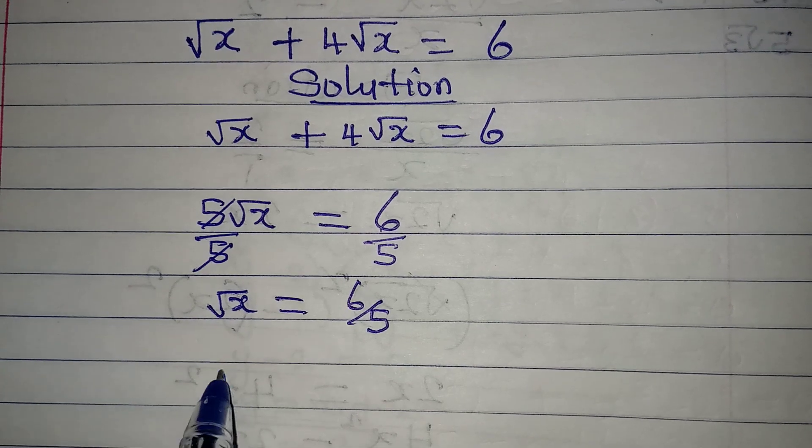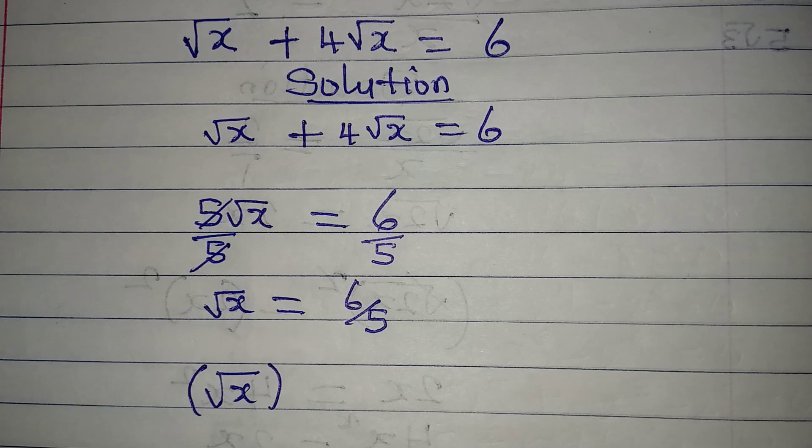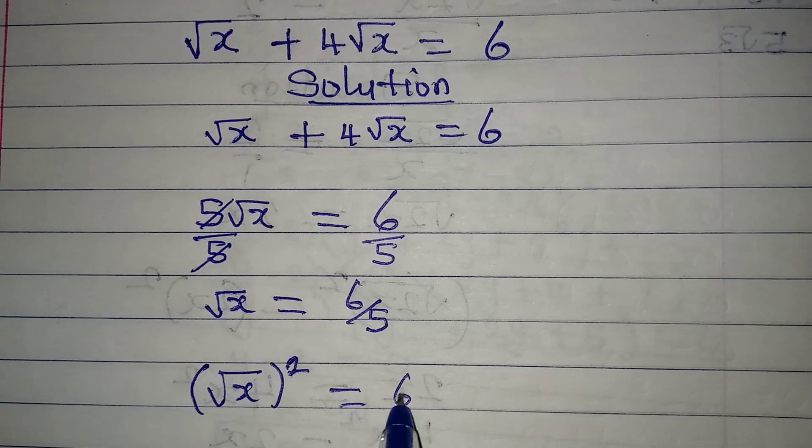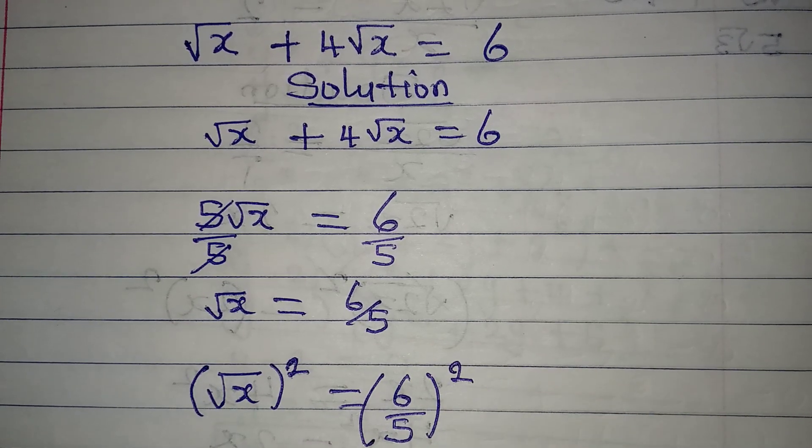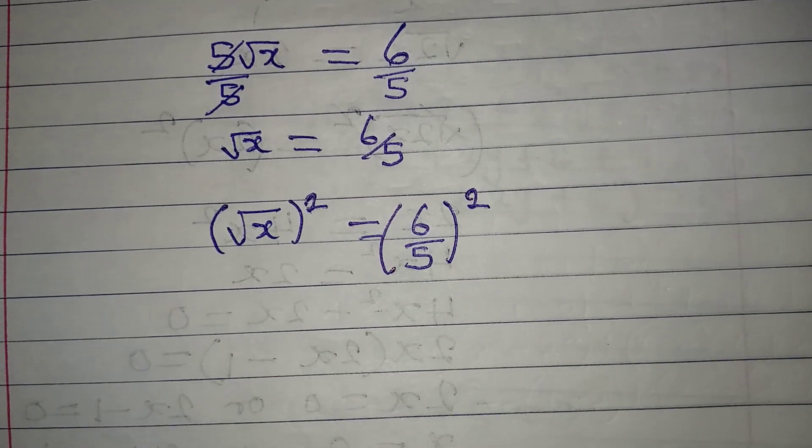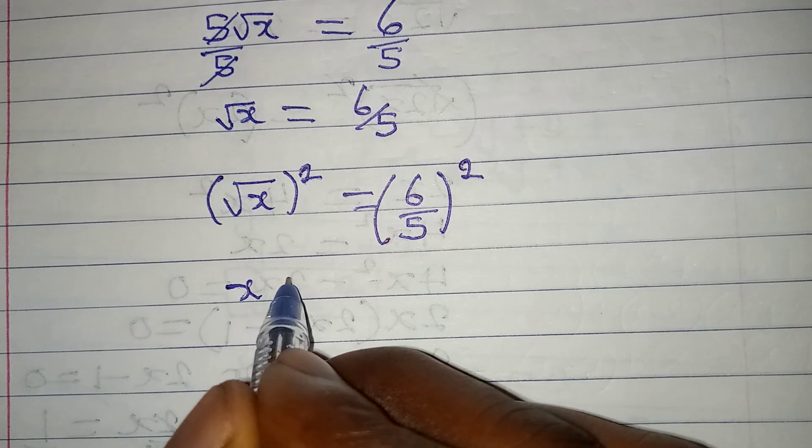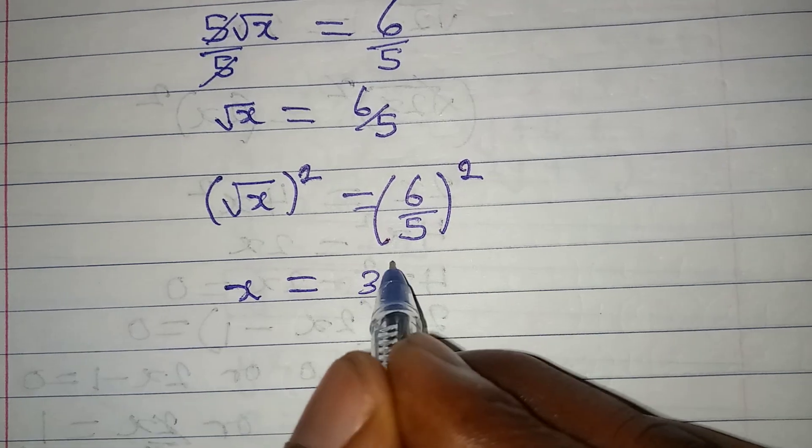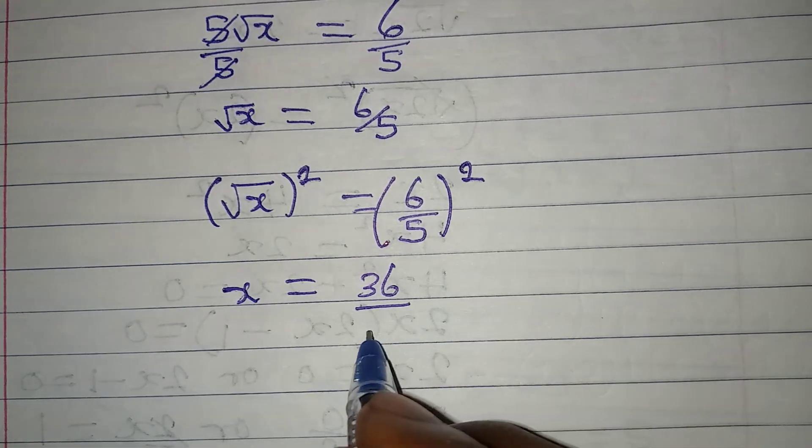The next thing is for us to square both sides, so that we can eliminate the square root. We have six over five and the whole of this is squared. Now what do we have from here? We have that x will be equal to six squared, which gives 36, over five squared, which gives 25.